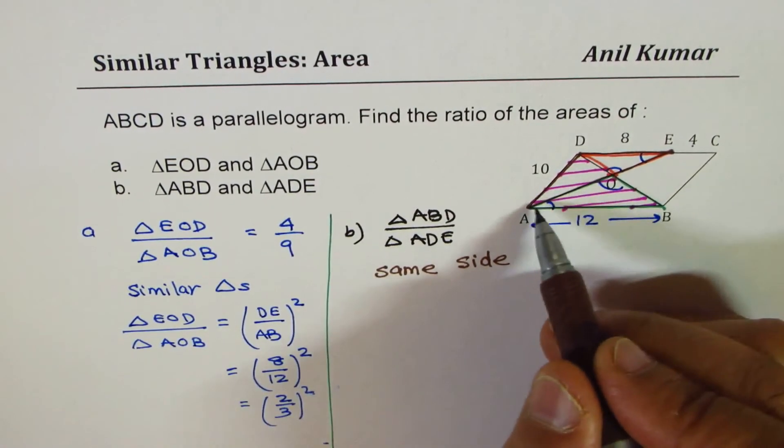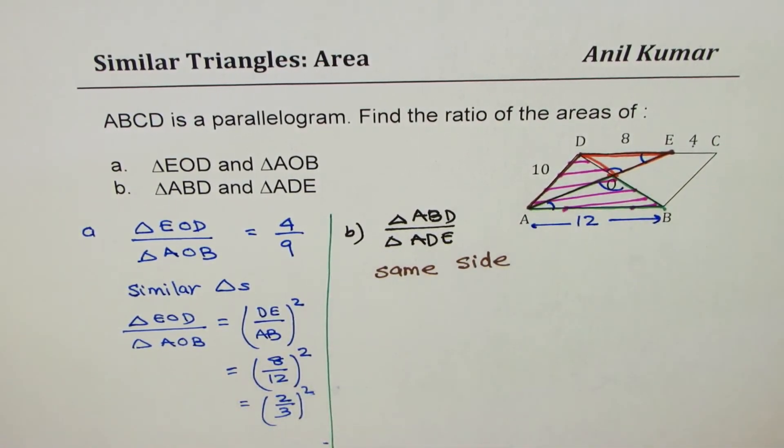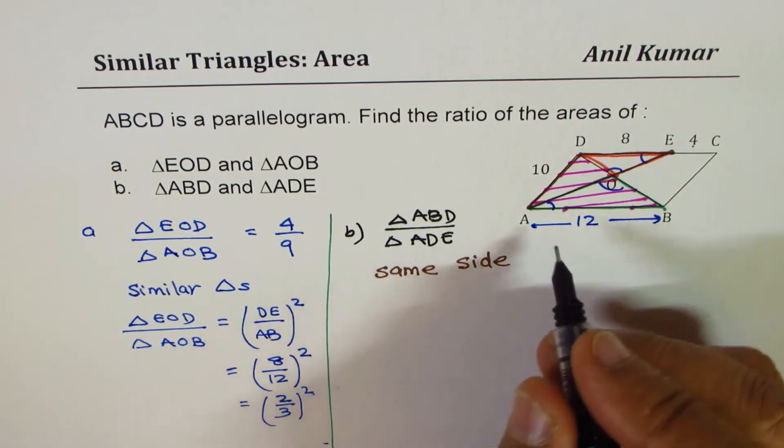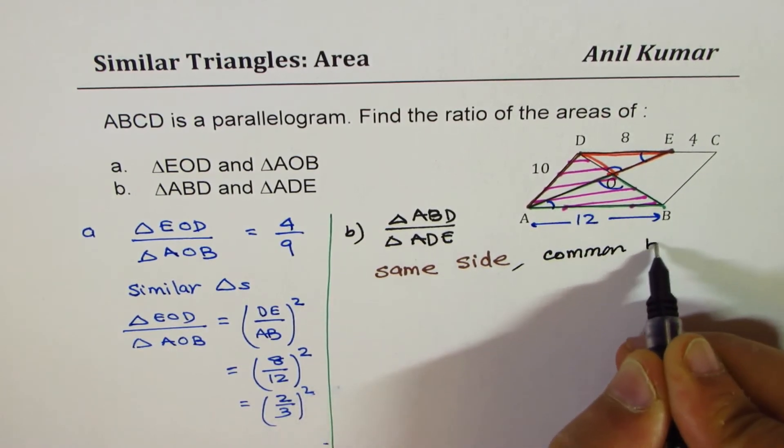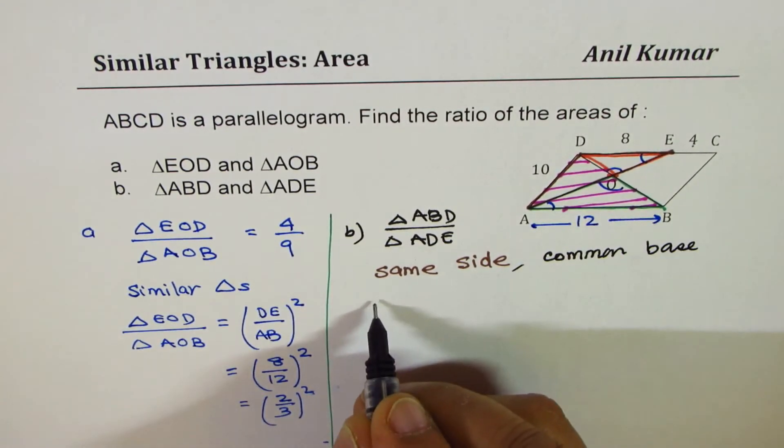Now, since we have a ratio of heights this time, we can say we have same base, so we can also say this as common base.